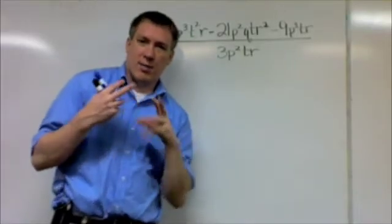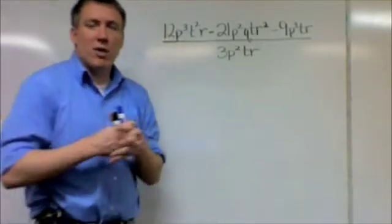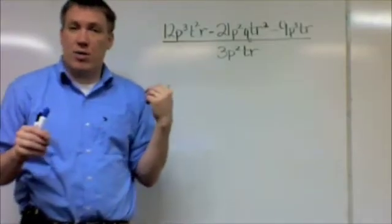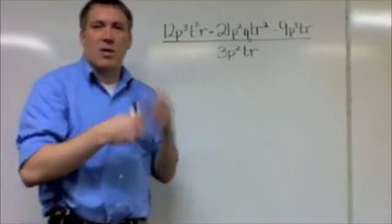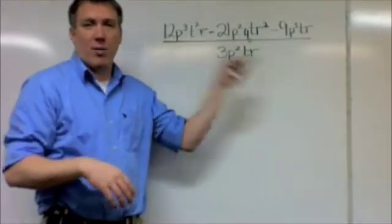What ends up happening is sometimes we get confused with the difference between dividing two monomials, which is what we've been doing - we've been canceling, we've been subtracting exponents and such like that - and a polynomial and a monomial.